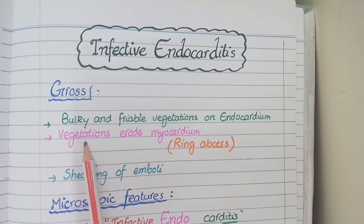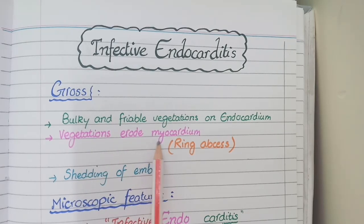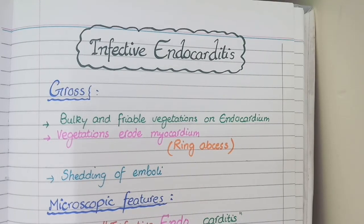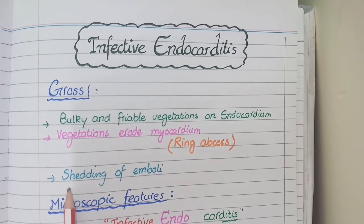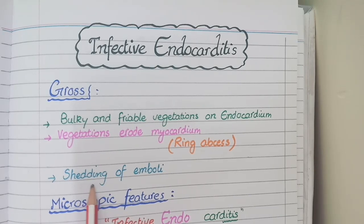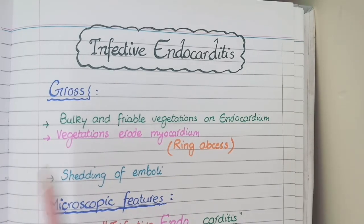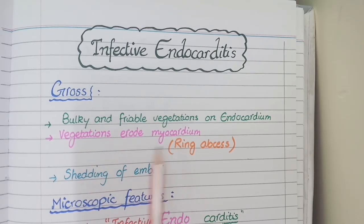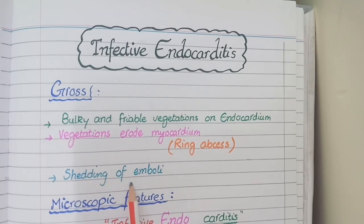Secondly, the vegetations initially present on the surface of the endocardium erode the underlying myocardium in a ring-shaped manner. Such erosions into the myocardium are known as ring abscesses. Thirdly, since vegetations are friable, some can be broken and embolized. So overall, you see friable vegetations on the endocardium, ring abscesses in the myocardium, and shedding of emboli.